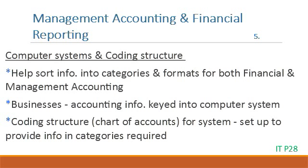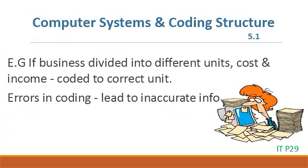5. Computer systems and coding structures help sort information into categories and formats needed for both financial and management accounting. In most businesses, accounting information is keyed into a computer system, and the coding structure — the chart of accounts — needs to be set up to provide information in the required categories. For example, if the business is divided into different units, costs and income need to be coded to the correct unit. Any errors in coding will lead to inaccurate information.